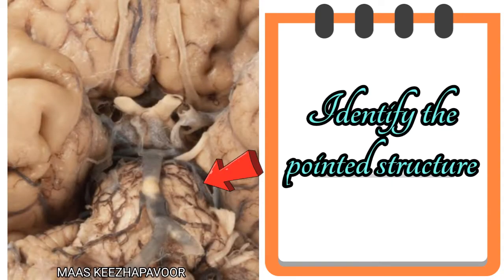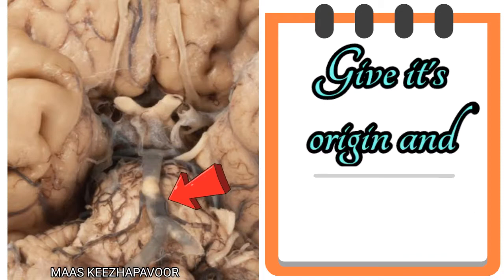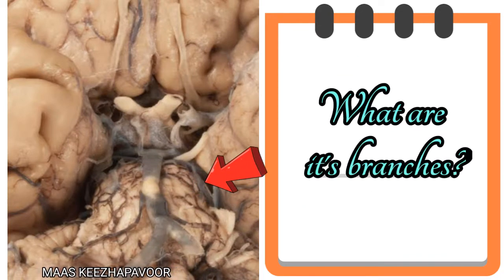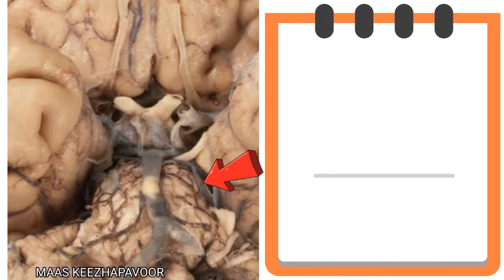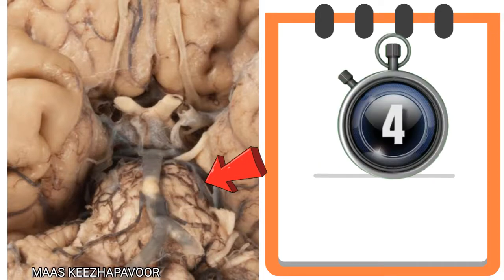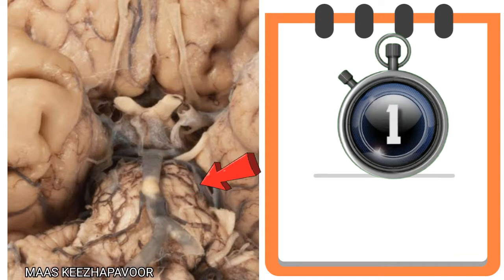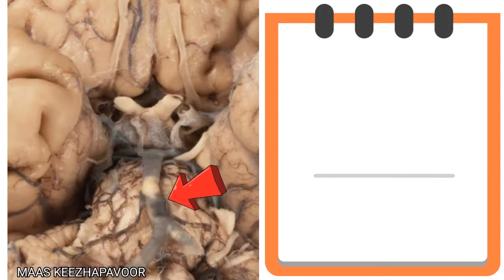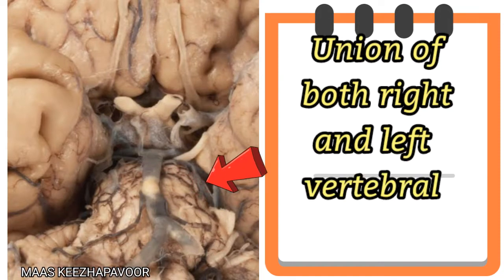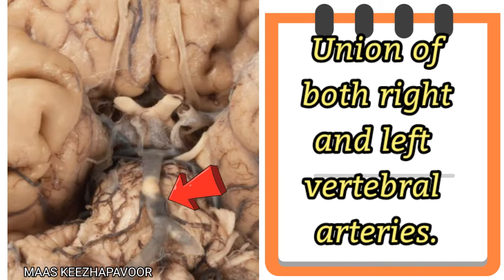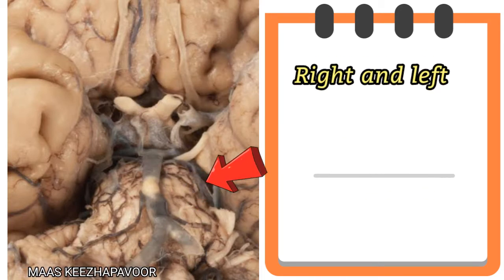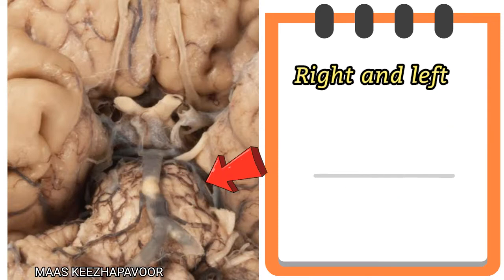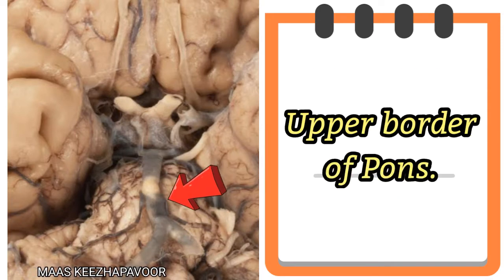Identify the pointed structure. Give its origin and termination. What are its branches? The pointed structure is Basilar artery. It is formed by the union of both right and left vertebral arteries. It terminates by dividing into right and left posterior cerebral arteries at the level of upper border of pons.